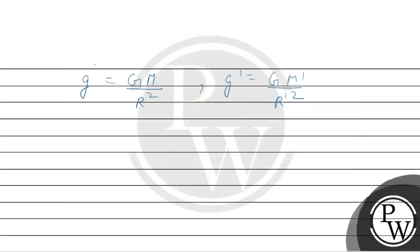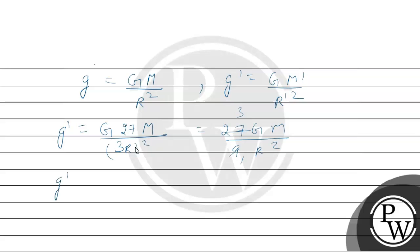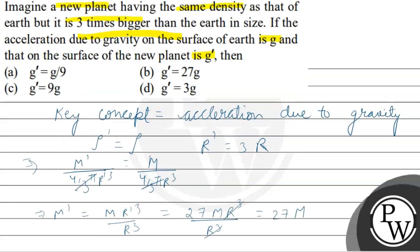Now we substitute the value of M dash. Since volume scales as R cubed, M dash equals 27M. And R dash equals 3R, so R dash squared equals 9R squared. Therefore, g dash equals G times 27M over 9R squared, which equals 3 times GM over R squared. Since GM over R squared equals g, our final answer is g dash equals 3g. So the answer is option D.